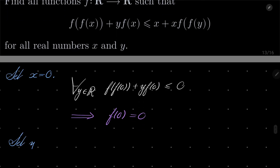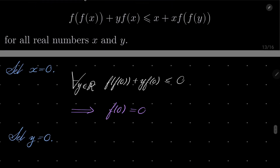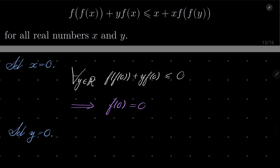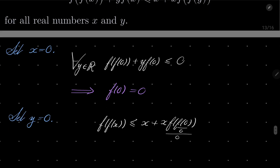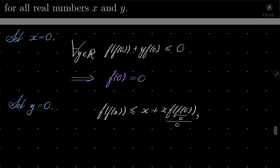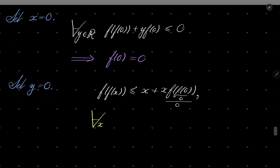Now let's set y to be 0. We have f(f(x)) + 0 ≤ x + x·f(f(0)), but f(0) is 0 and f(0) is 0 again. So we have established that for every real number x, f(f(x)) is less than or equal to x.